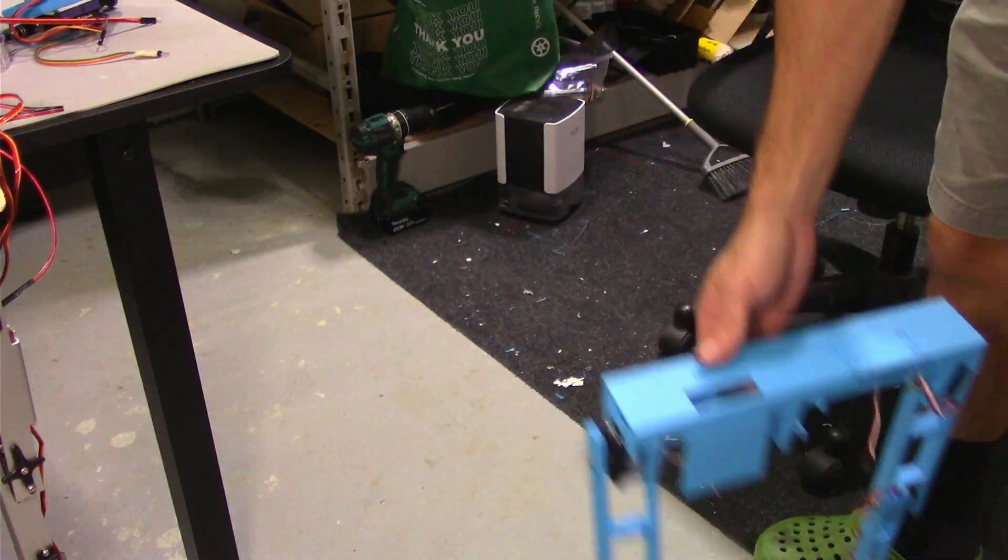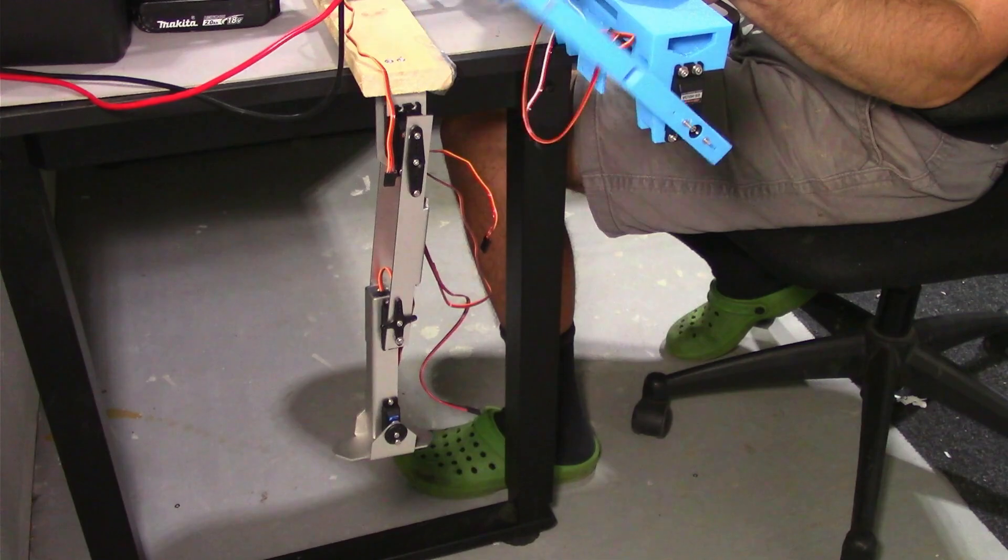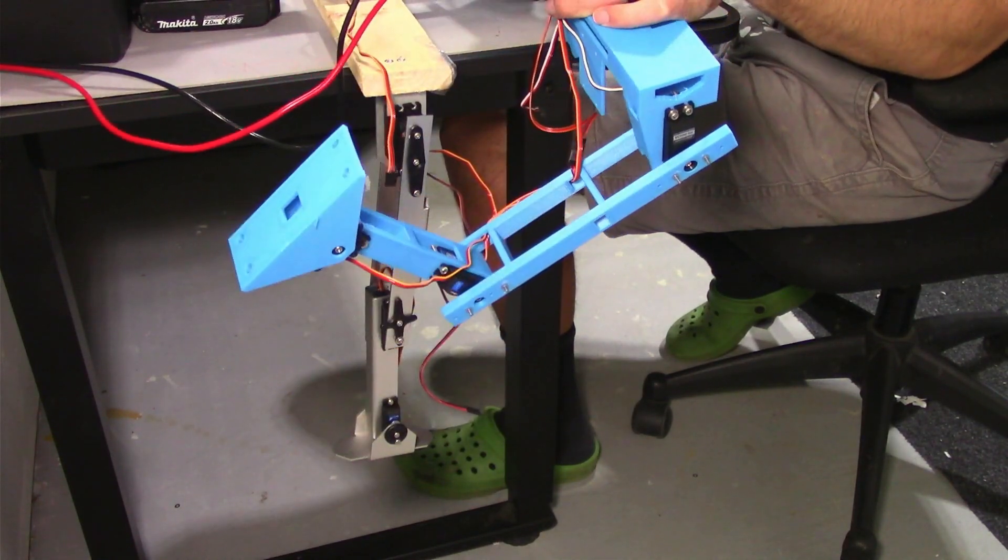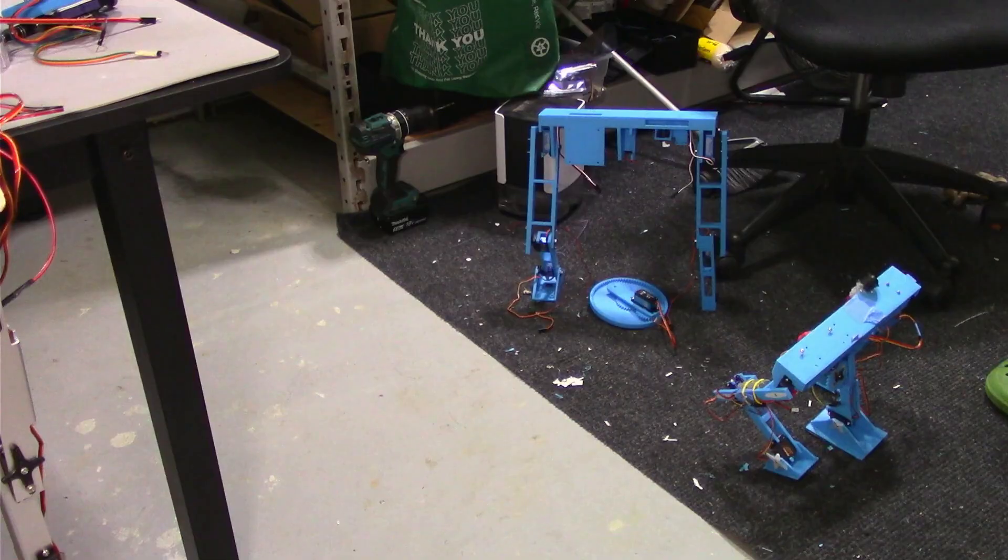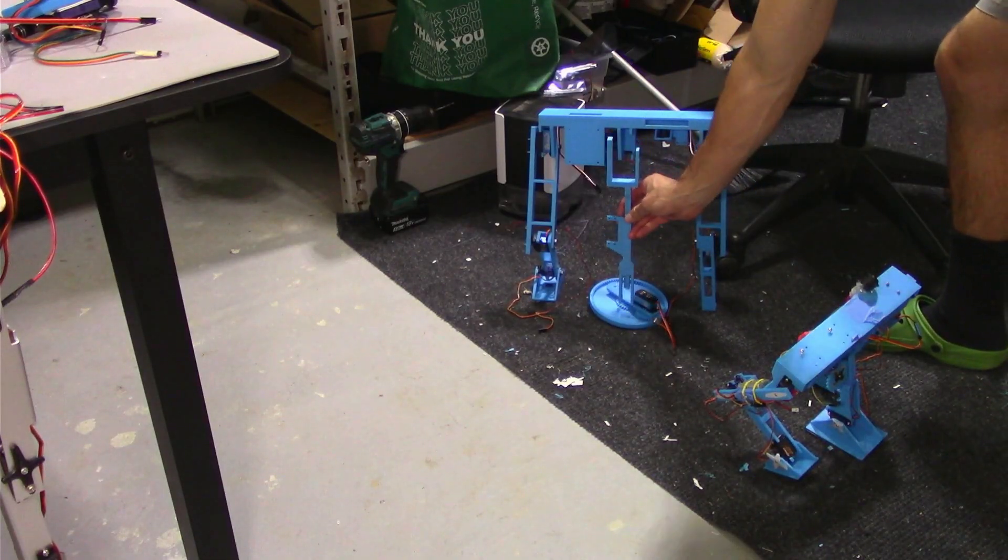The old robot actually uses all the same size servo motors. The new robot is more realistic. It has bigger servo motors in the thighs, medium-sized ones in the knees, and little ones in the ankles. Also, its center foot will be a planetary gear pancake. This way you can spin 360 continuously without lifting up off the ground.